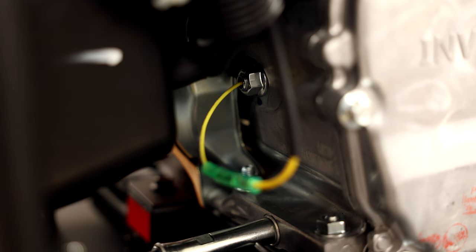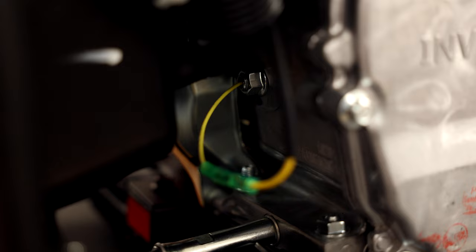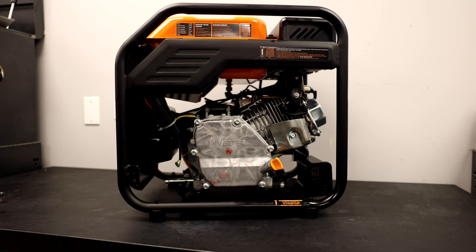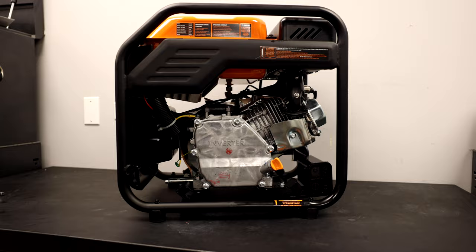Step 2: Locate the oil sensor wire. On all generators, it's a yellow or yellow and black wire coming out from the side of the crankcase, usually just above the oil fill and the serial number. On some models, you may need to take off an access panel to get to the side of the crankcase.